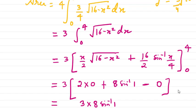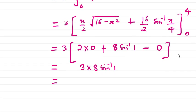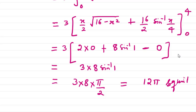You know that the value of sin⁻¹(1) is π/2, so the answer will be 3 × 8 × π/2. Overall, we solve it, so you get 12π square units as the answer for this question.